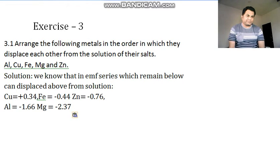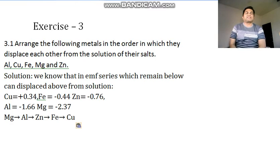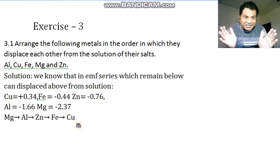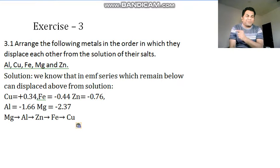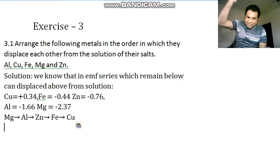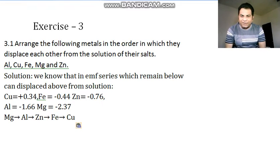That means copper sulfate solution, iron can displace, zinc can also displace, aluminum can also and magnesium. Magnesium has highest value so it can displace all. That's why we have to write series in this pattern: Magnesium can displace aluminum, zinc, iron, and copper. Aluminum can displace zinc, iron, and copper. Zinc can displace iron and copper. And iron can displace only copper. This is our theory. I hope that you understand - who are below in series can displace the solution of upward. That is the first question.